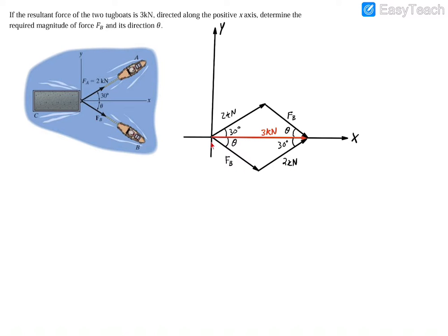So what I'm going to do is I'm actually just going to transcribe this triangle out of this coordinate system here, just so that I can have a cleaner model to work with. So we'll have FB, something like that, and then our two kilonewton force, and then of course our resultant force horizontally.